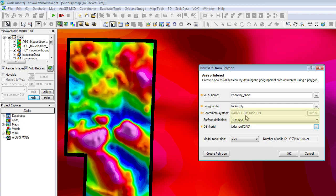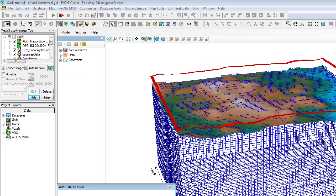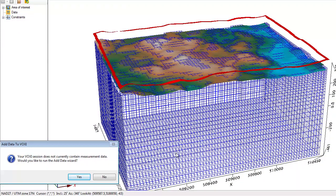Voxi is geospatially aware, so it could pick up the coordinate system from the map and also propose a reasonable cell size for the modeling. Note also, I have the mesh size of the area that I will be modeling. Here we go. This is my model. This is the volume for which the susceptibility property will be calculated. I now have to provide the magnetic data that covers this area.